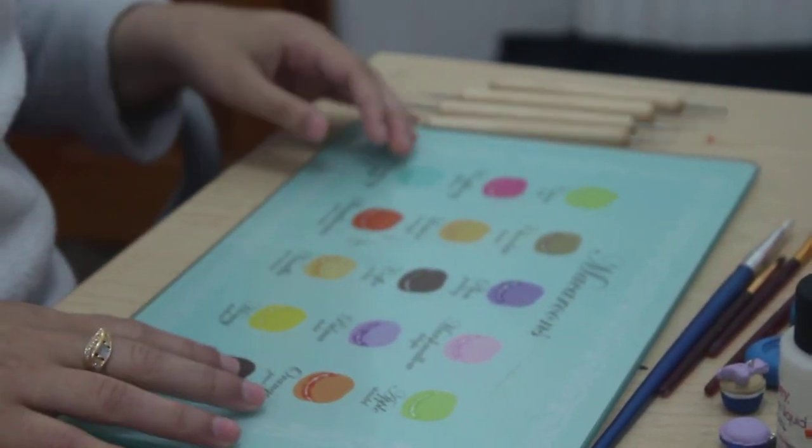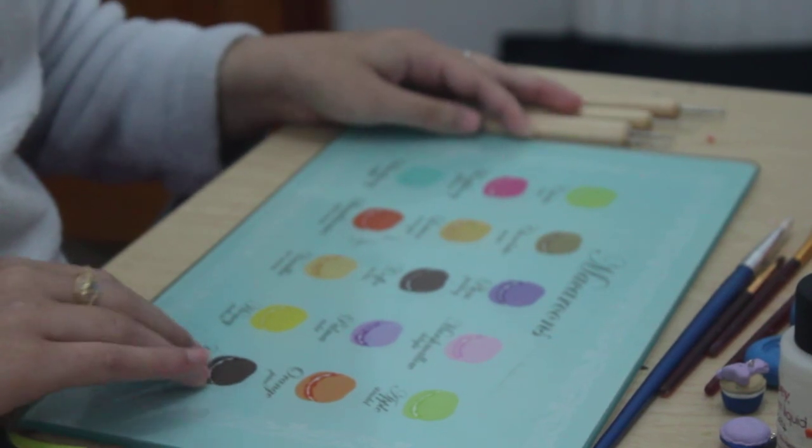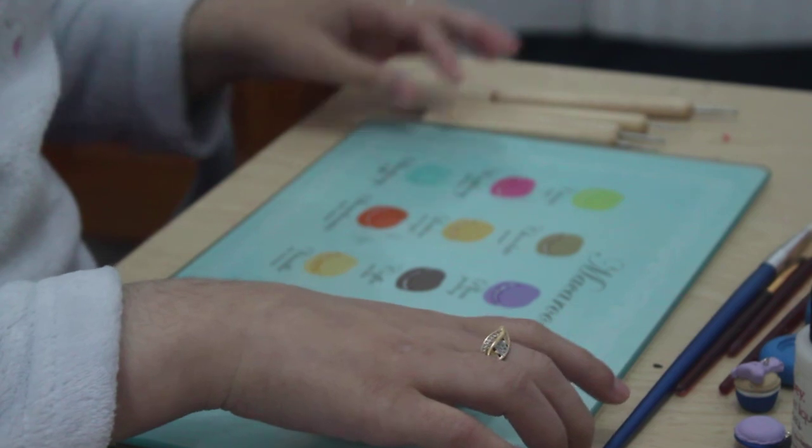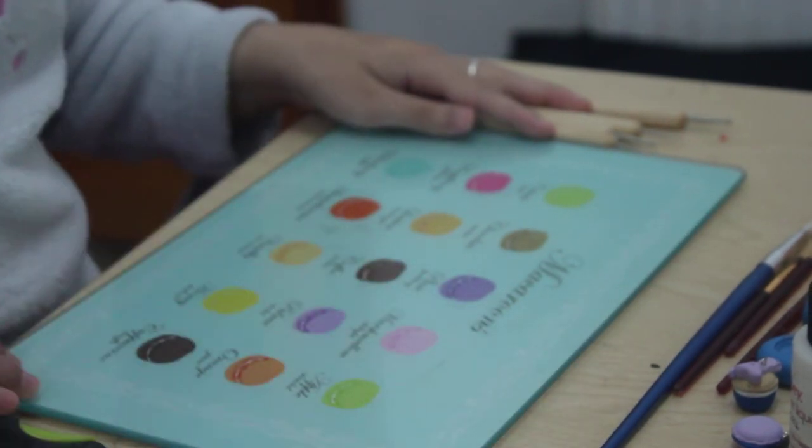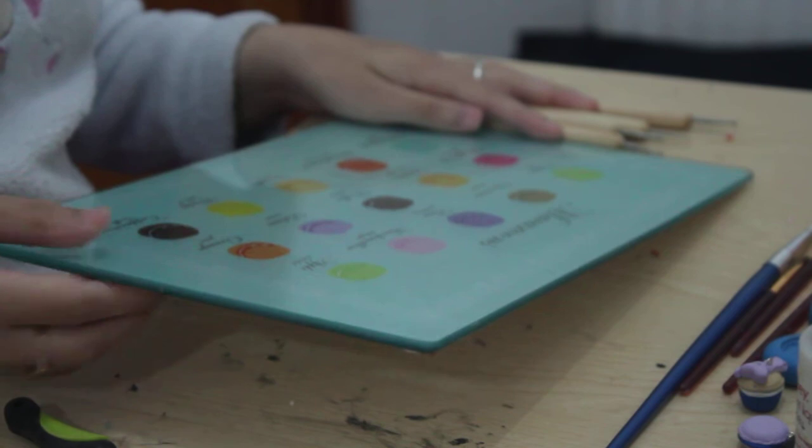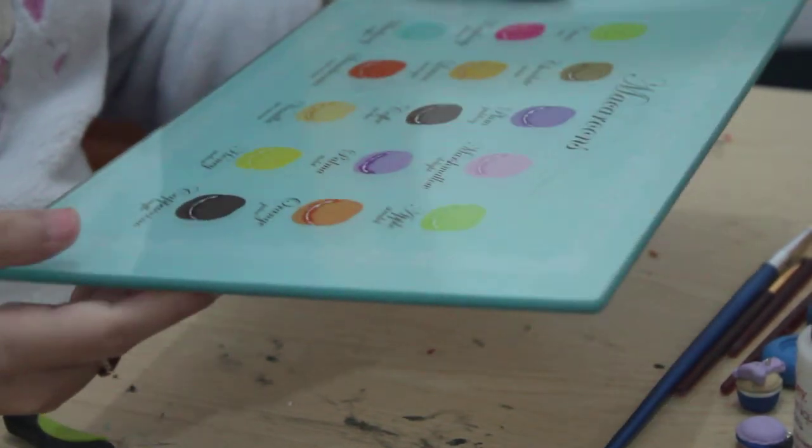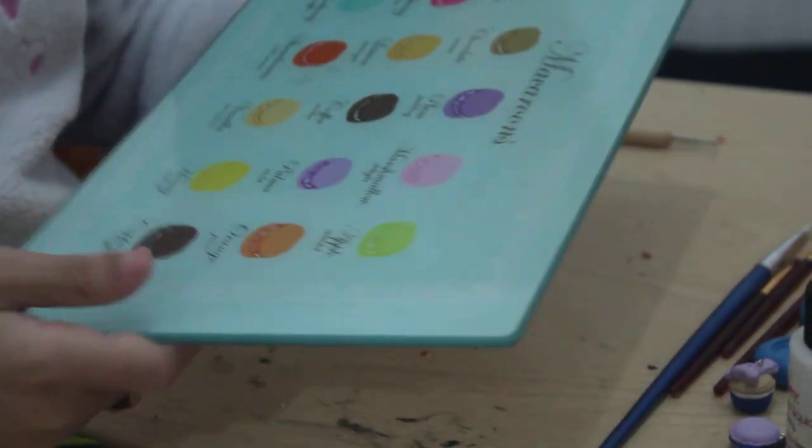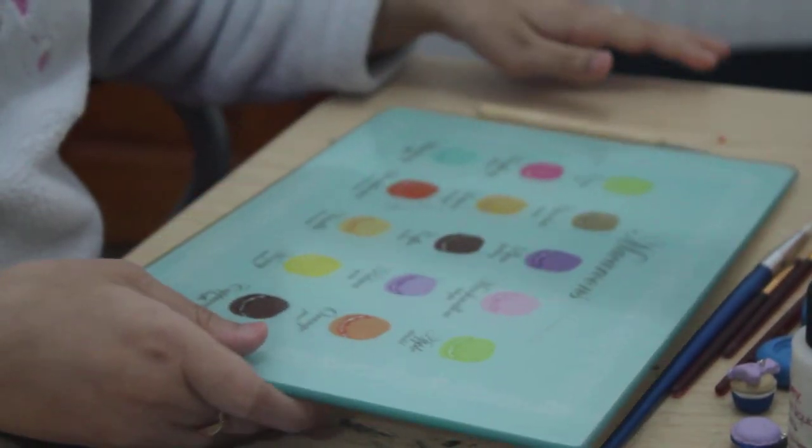So first of all, you're going to need a work surface, and I use this chopping board that I got from Homeland.